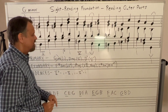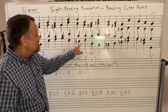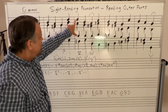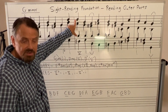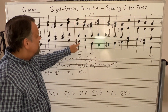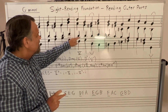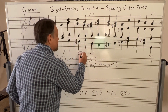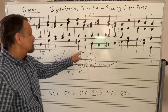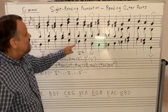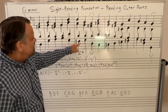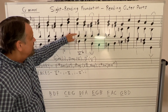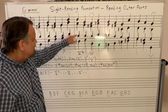Notice how the bass note is not D here — we have two D's but D is the root, F sharp is the third, A is the fifth. Because the third is in the bass, it's first inversion, so it gets that little superscript six. The reason it's six is because the distance between the bass note and the next note up is a sixth. So that's just a shorthand for that.